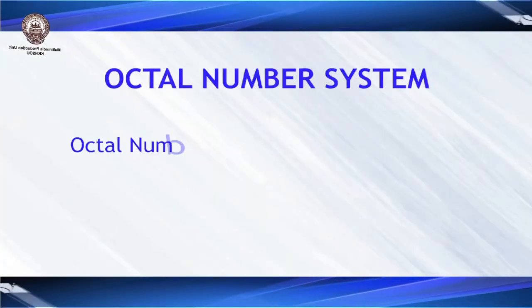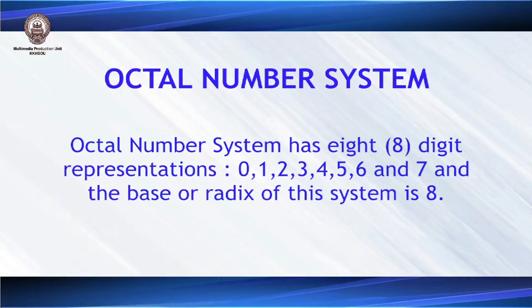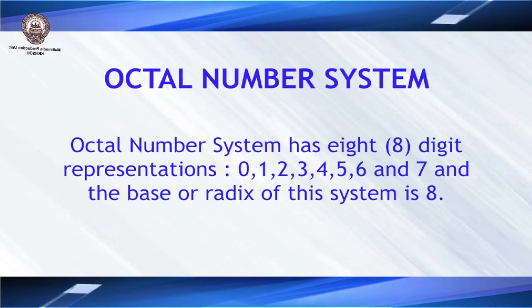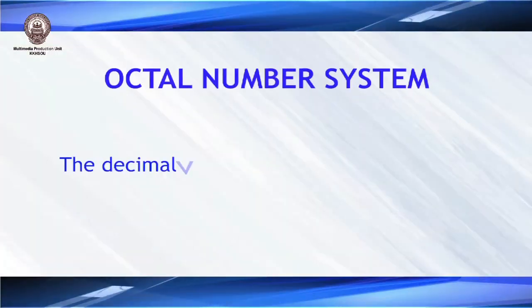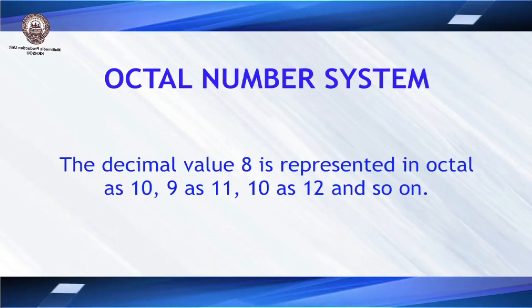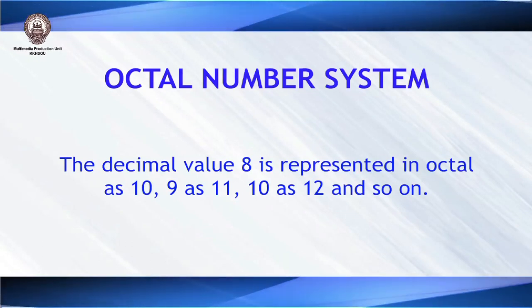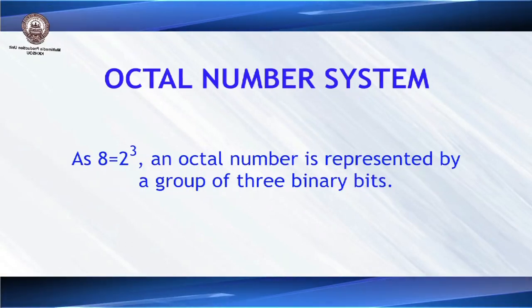Now let's look at the octal number system. The octal number system has 8 digits starting from 0 to 7, so its base is 8. How do we represent decimal 8, 9, or 10 in octal? The decimal 8 is represented as 10, decimal 9 as 11, and decimal 10 as 12. Since 8 can be represented as 2 to the power 3, an octal number can be represented by a group of 3 binary digits. For example, 3 is 011 and 4 is 100.